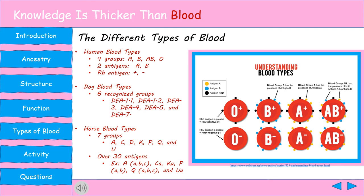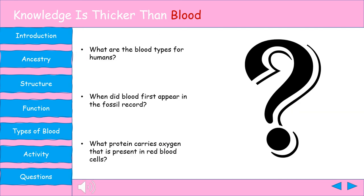Canines have as many as 13 group systems identified, but only six are most recognized. Dogs can be classified as positive or negative for each DEA — Dog Erythrocyte Antigen, where erythrocyte means red blood cell. Horses have seven different red blood cell groups, and over 30 different factors have been identified for horses. The blood groups are named with an uppercase letter to denote the group and a lowercase letter to designate the antigen, with a variable number of factors for each blood group.